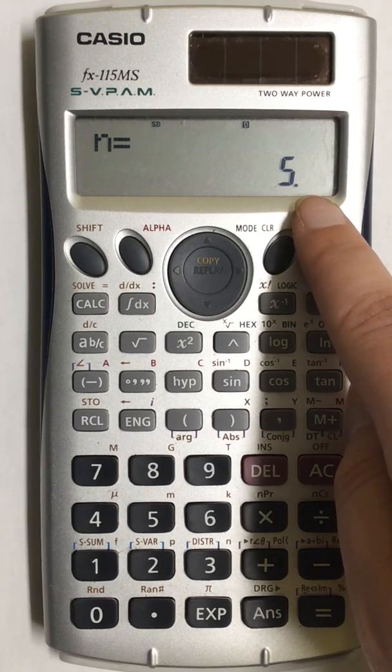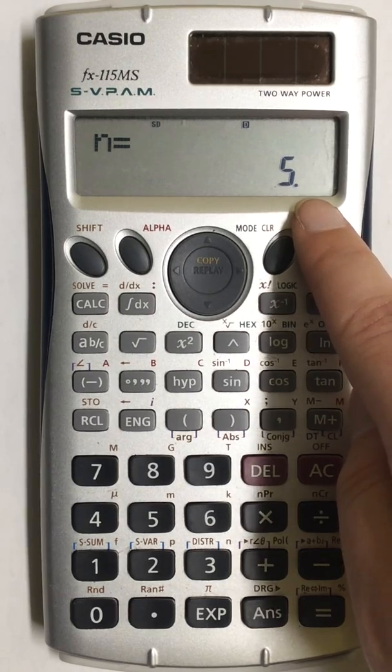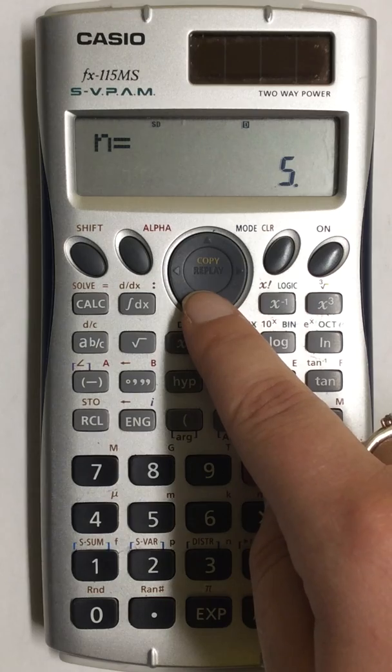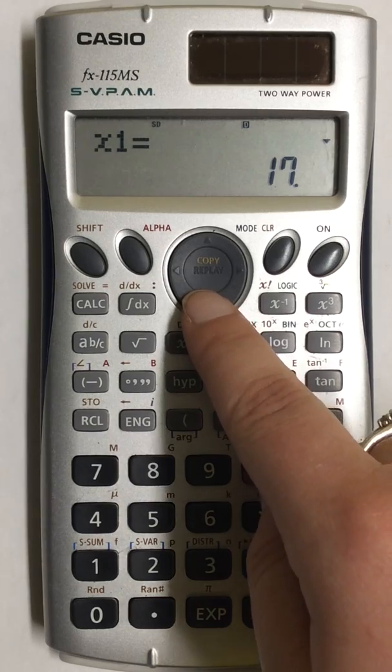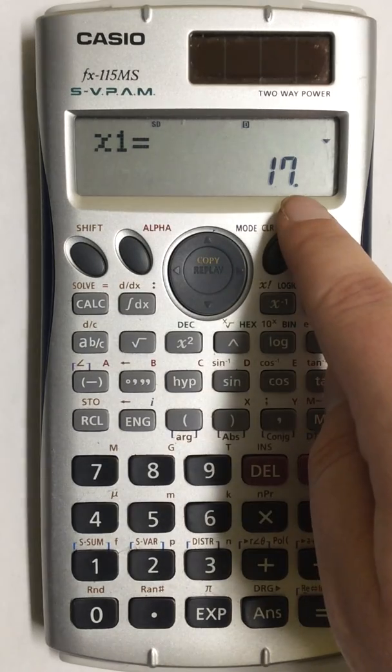To review the numbers that you have entered, you can press the down arrow. That will go through and show you each number.